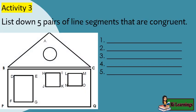Activity 3: List down five pairs of line segments that are congruent.